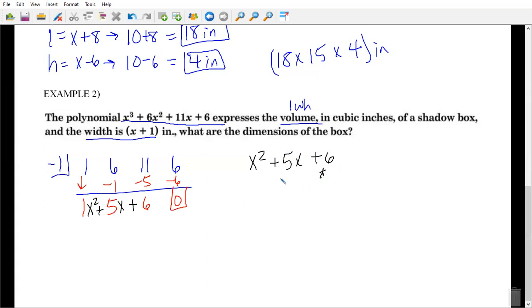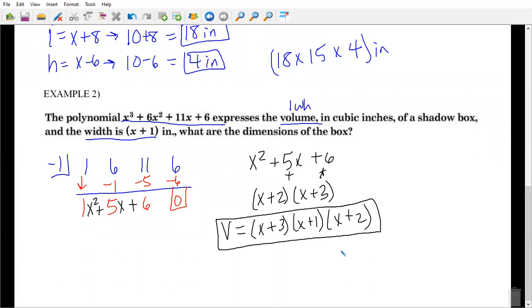So we have x squared plus 5x plus 6. So what multiplies to give me 6 but adds to give me 5? 2 and 3. x plus 2 times x plus 3 are my height and my length. So we know the volume equals our length, which is x plus 3, times our width, which is x plus 1, times our height, which is x plus 2.